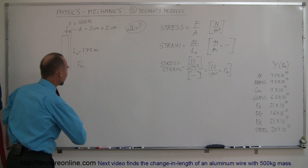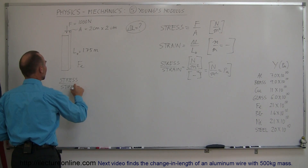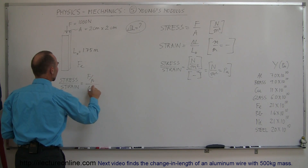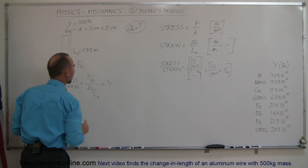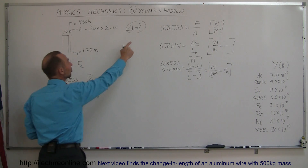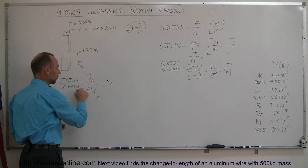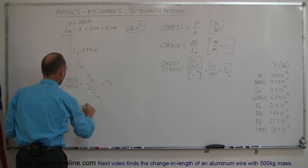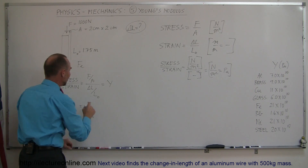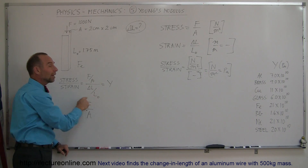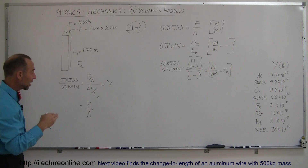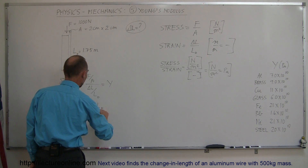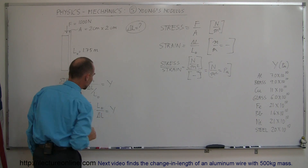The stress divided by strain — which by definition is force divided by area, divided by the change in length over the original length — equals Young's modulus. What we're looking for is the change in length, delta L, so we need to solve this equation for delta L. We write it as force divided by area, and dividing by the fraction delta L over L₀ is the same as multiplying by its inverse, L₀ divided by delta L. That equals Young's modulus.